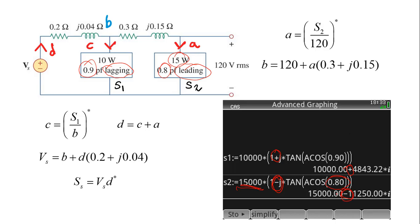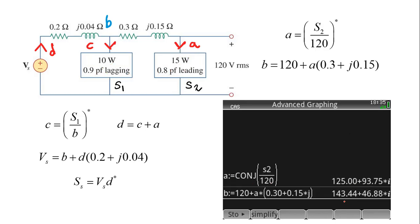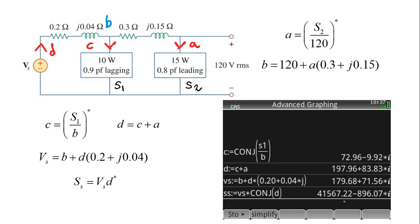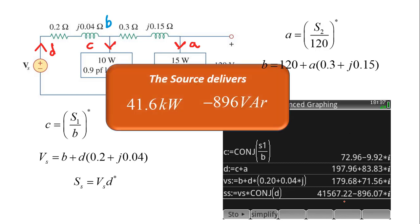We are ready to use all the formulas and find the power delivered by the source. Current A equals the conjugate of S2 divided by 120. Voltage B equals 120 plus the drop produced by A in the second cable impedance. Current C equals the conjugate of S1 divided by voltage B. Current D equals the sum of C plus A. The source voltage equals B plus the drop of D in impedance 0.2 + j0.04. That source is delivering 41.6 kilowatts and negative 896 vars — meaning it is effectively absorbing 896 vars. We know it's delivering power because current D is drawn flowing from lower voltage to higher voltage.